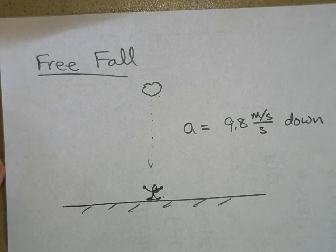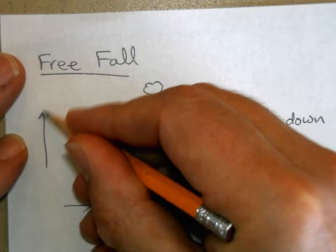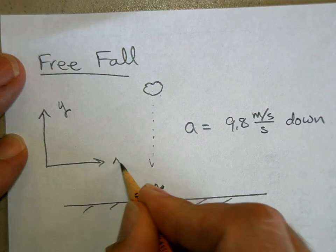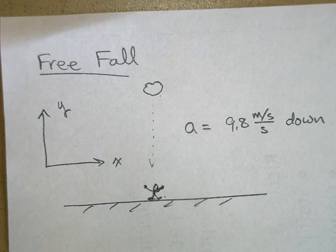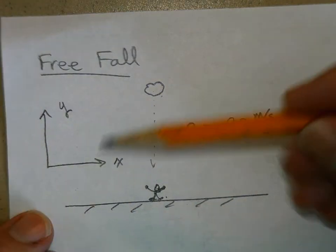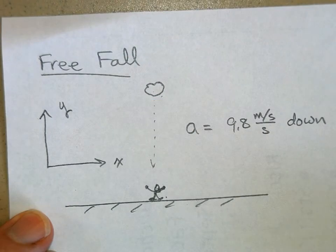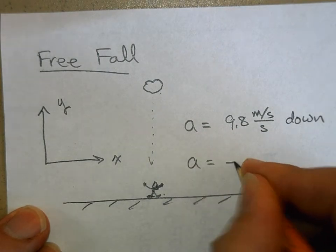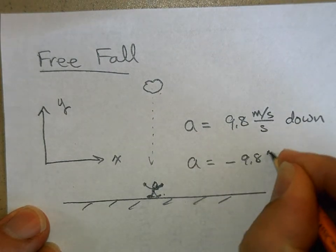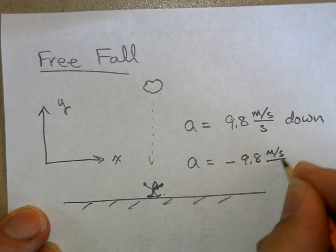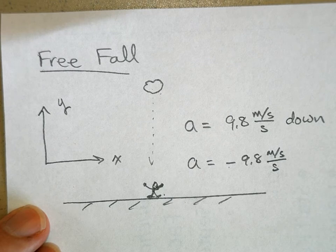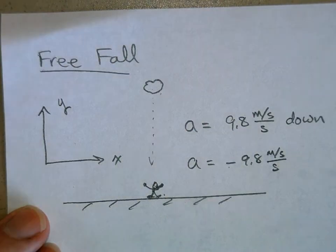Now we have a way of saying down. What we're going to do is we're going to draw an axis system here. I'm going to call this the Y direction. This is the X direction. And so if I say that up is the positive Y direction, well then our acceleration is negative 9.8 meters per second, every second, in a negative Y direction.